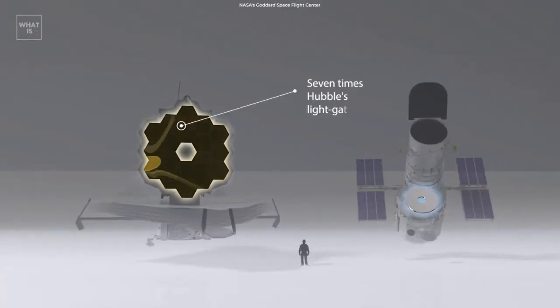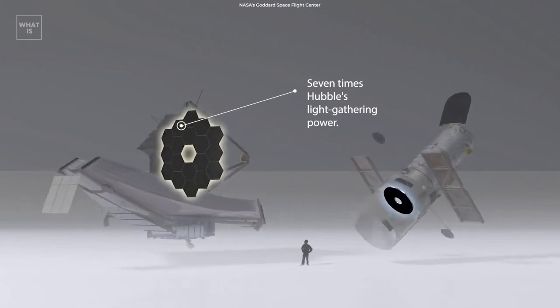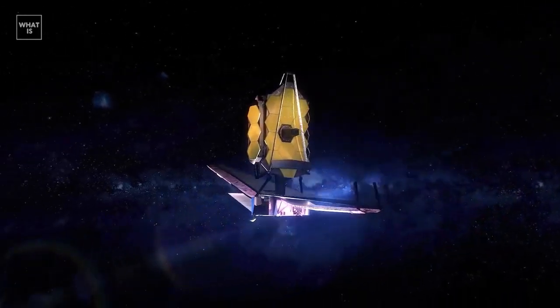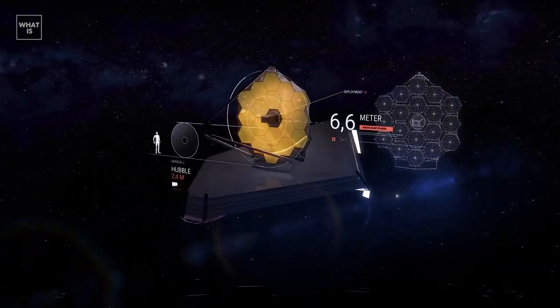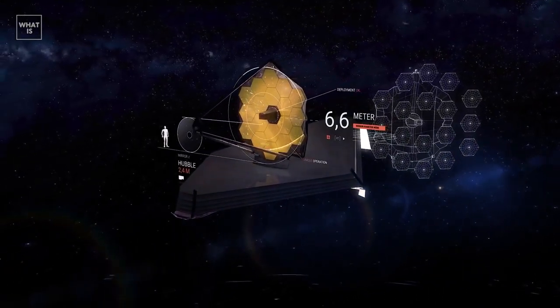The diameter of James Webb is about 2.5 times that of Hubble, and this is one of the most important parameters that determine the resolution of the telescope, that is, the ability to distinguish the smallest details in the pictures.